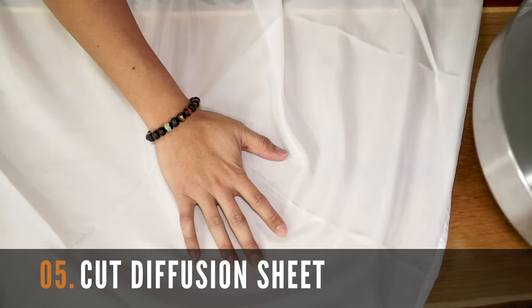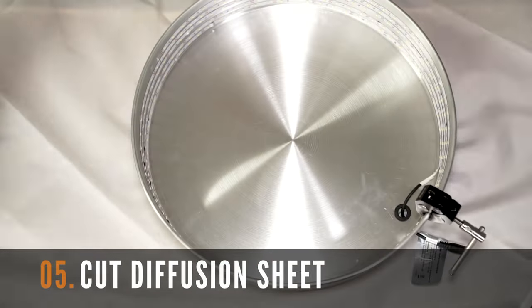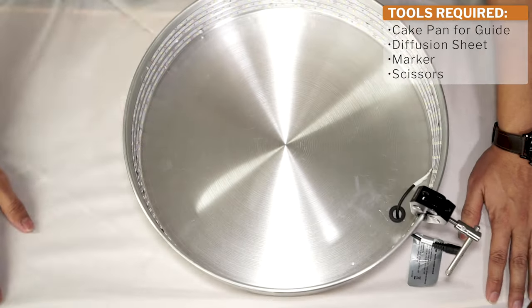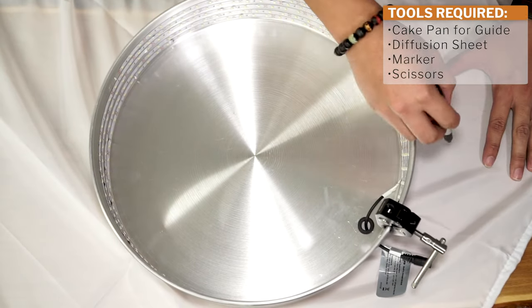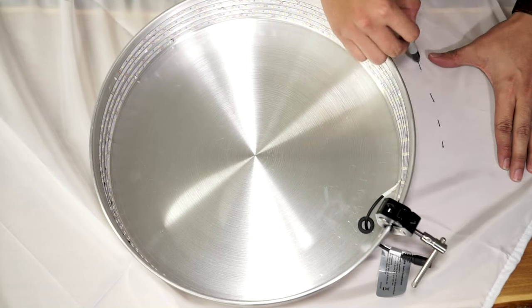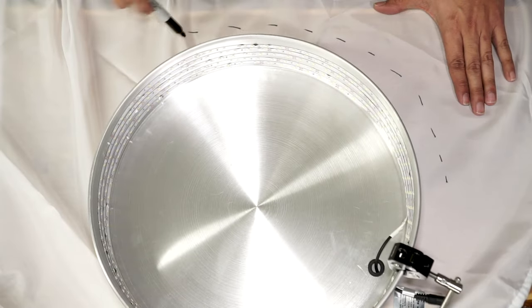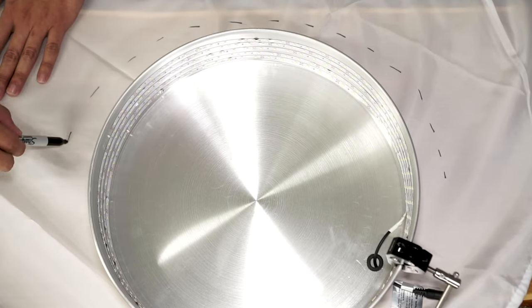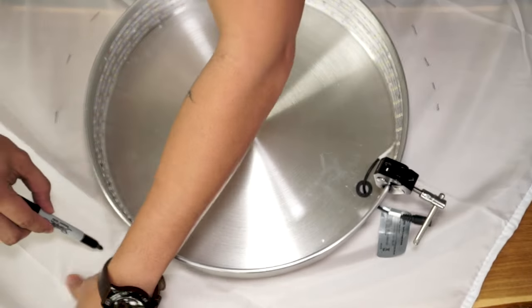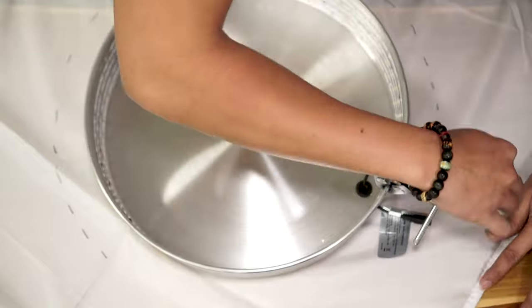Now cut the diffusion sheet using your cake pan as a stencil. Use a marker and mark about 3 inches outside the diameter of your cake pan. This will give you some room to tape the diffusion sheets on the outside layer of the cake pan and allow for a tighter fit of the end product.